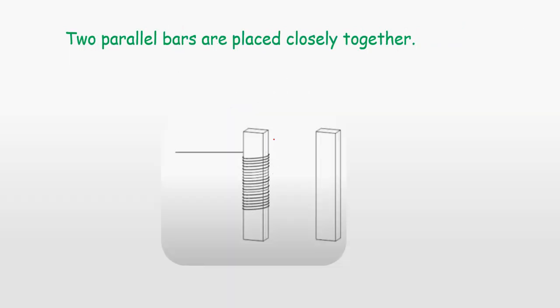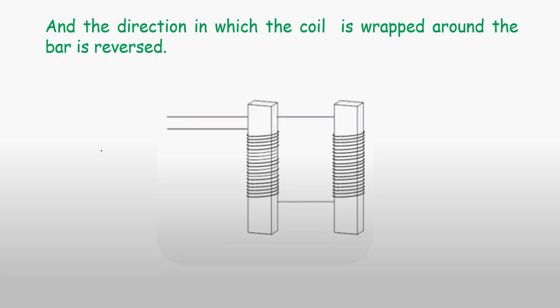In a fluxgate magnetometer we normally use two parallel bars that are closely placed together. We shall always ensure that we include our primary coil - the coil that we are winding around the bar.